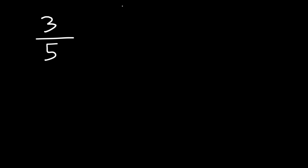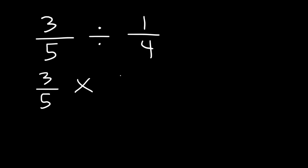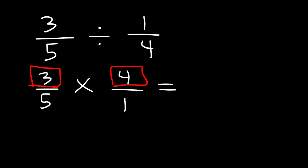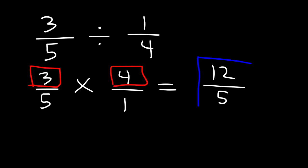Now let's try another example: 3 over 5 divided by 1 over 4. Feel free to pause the video and try that. So let's keep the first fraction the same, change division to multiplication, flip the second fraction, and multiply across. 3 times 4 is 12, and 5 times 1 is 5. We can't reduce this fraction, so the final answer is 12 over 5.